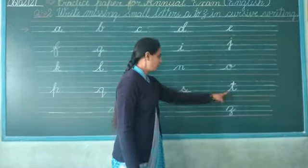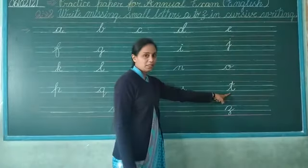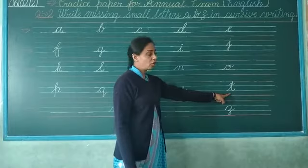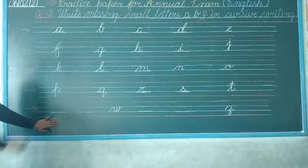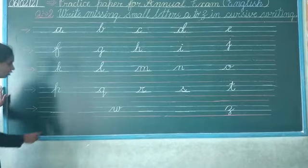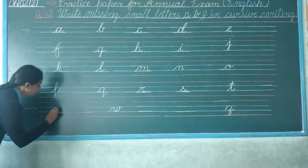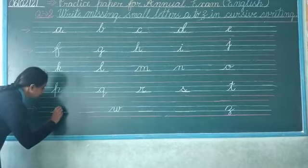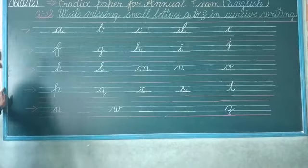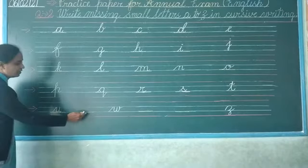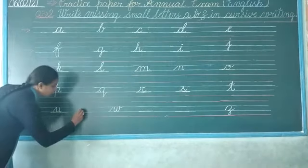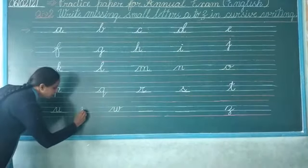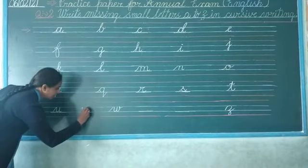Then which letter comes after S? T — it's already there. Then which letter comes after T? U. So we write here U. Then which letter comes after U? V. So we write here V.